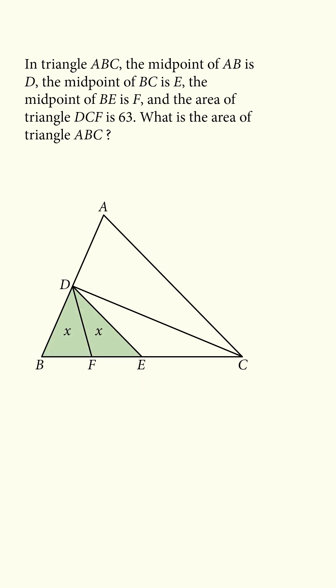this entire triangle has area equal to 2x, and BE is equal to EC, so triangle DEC has area equal to 2x. Using the principle one more time, since BD is equal to AD, triangle ADC has area equal to 4x.